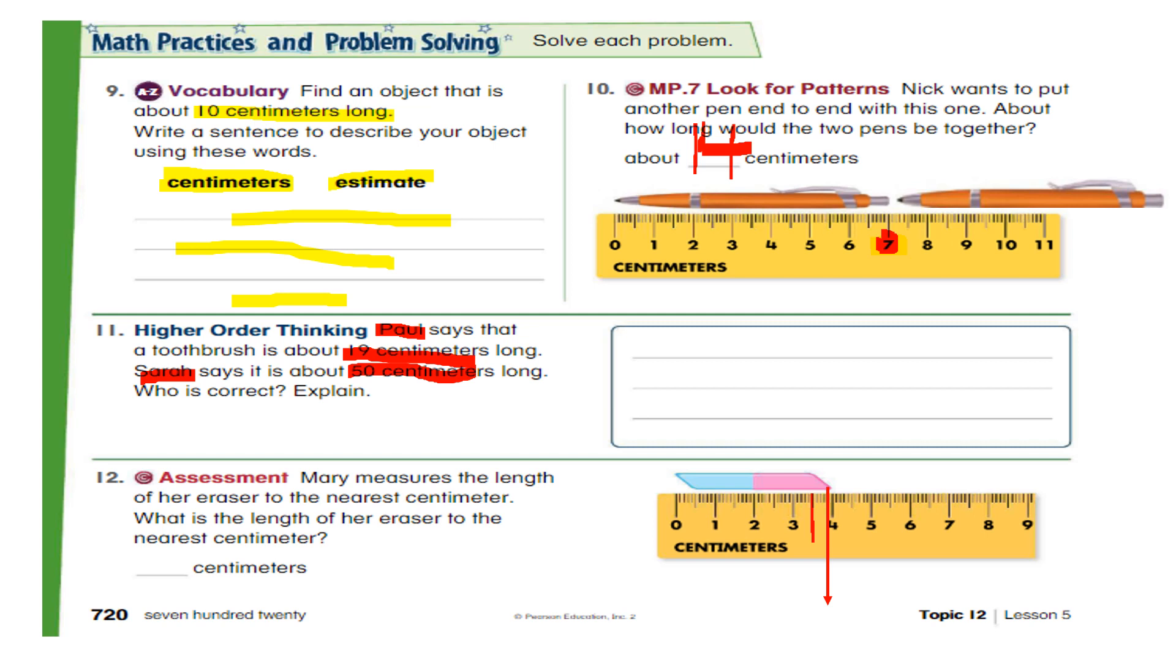And the object or the eraser ends on greater than halfway mark or shorter than halfway mark. Excellent. It is finishing on this point. And this point is greater than halfway mark. So what is the length of her eraser? If the object is bigger than halfway mark, so you will choose four or three. Excellent. It will be four. Very good.